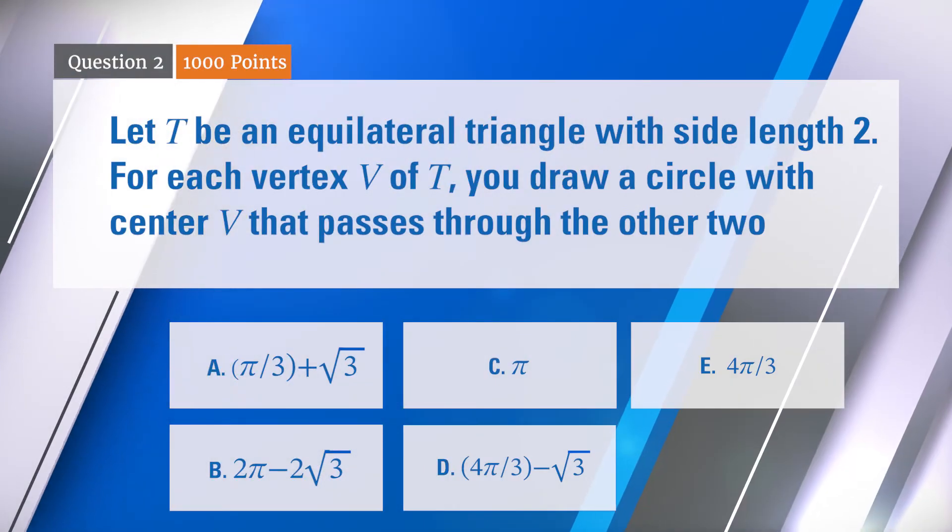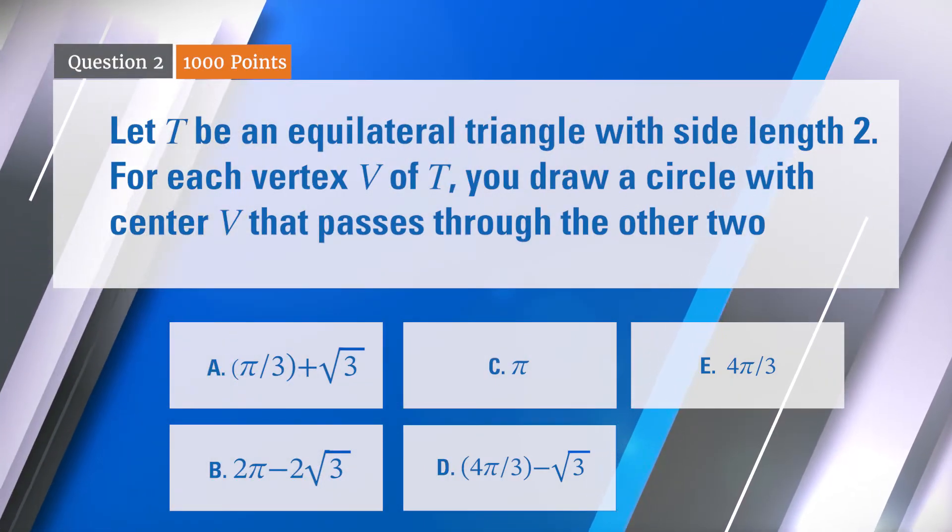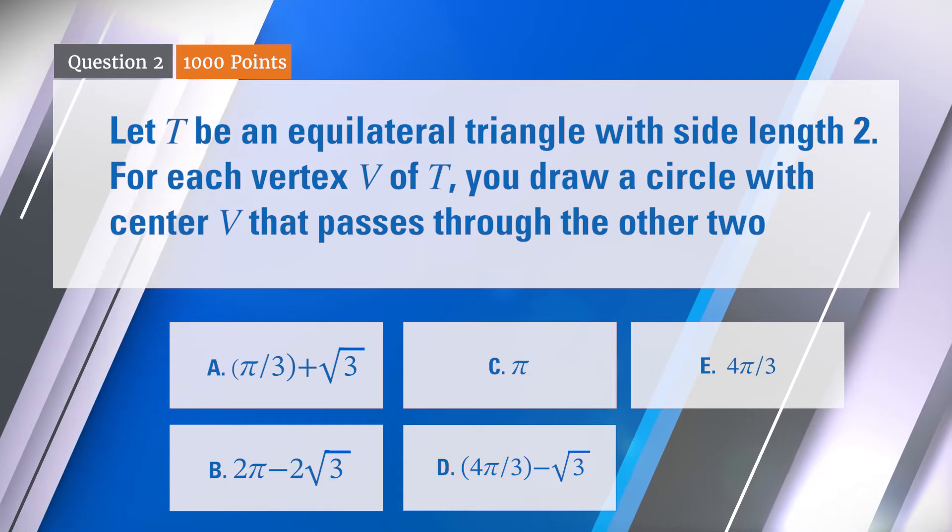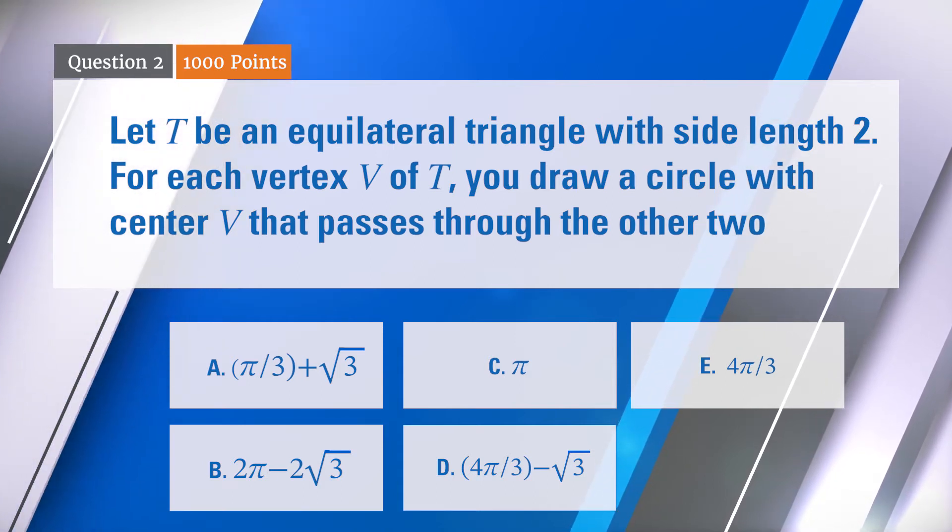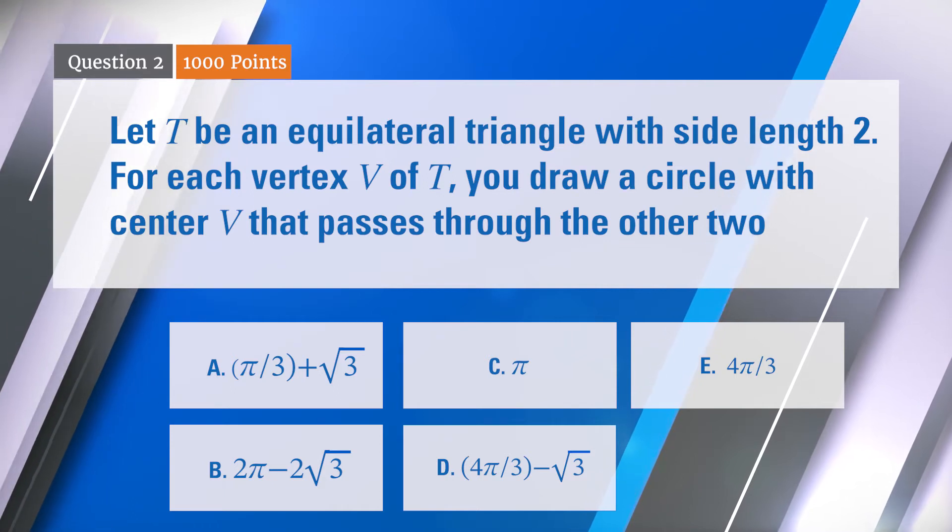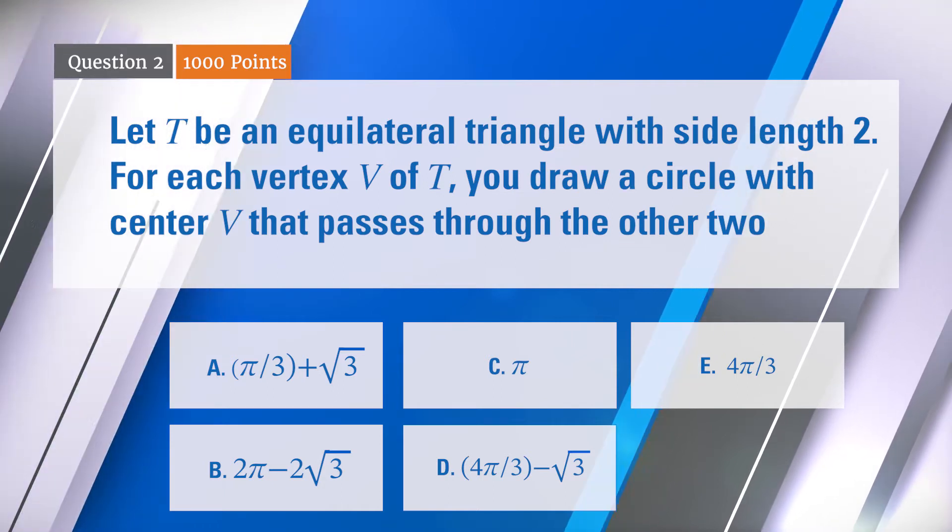All right, here comes question two now. Let T be an equilateral triangle with side length 2. For each vertex V of that triangle T, you draw a circle with center V that passes through... B as in Bernoulli, 2π - 2√3.